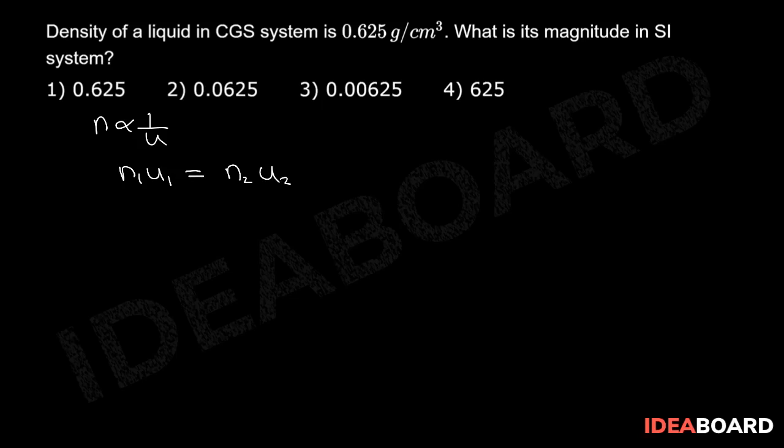Now in this given case, I am going to consider U1 is the CGS units and U2 is the SI unit system. Then N1 should be equal to 0.625 gram per centimeter cube should be equal to N2 into kilogram per meter cube.